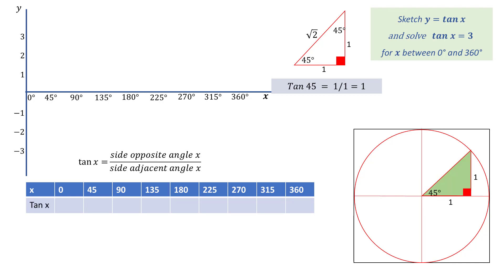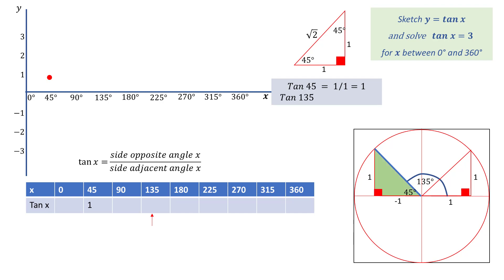Working out the values in the table, we start with tan of 45, which we know is 1, and which is plotted on the graph. Leaving 90 degrees till later, we rotate the wheel to 135 degrees, which forms another right angled isosceles triangle in the second quadrant, where the side opposite 45 is 1 and the adjacent side is negative 1, giving tan of 135 degrees equal to negative 1, which is then plotted on the graph.